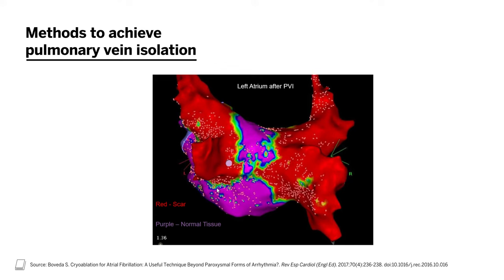Ideally, this is the kind of map you would see after an ablation, where purple tissue is normal and red tissue is scar. You can see that the veins are all in red, meaning there is no electrical activity there, whereas the purple tissue remains outside of the veins.